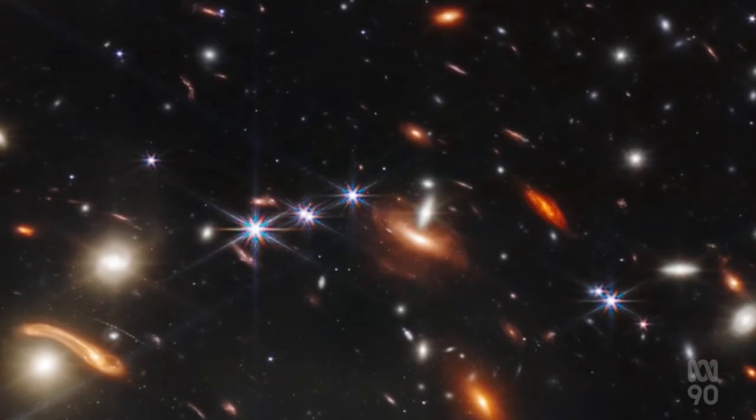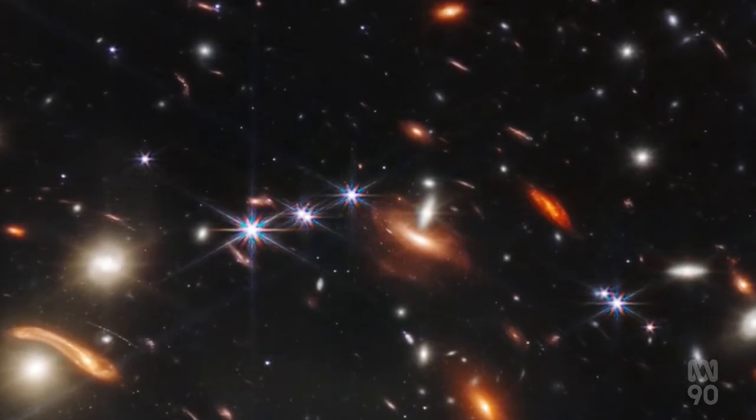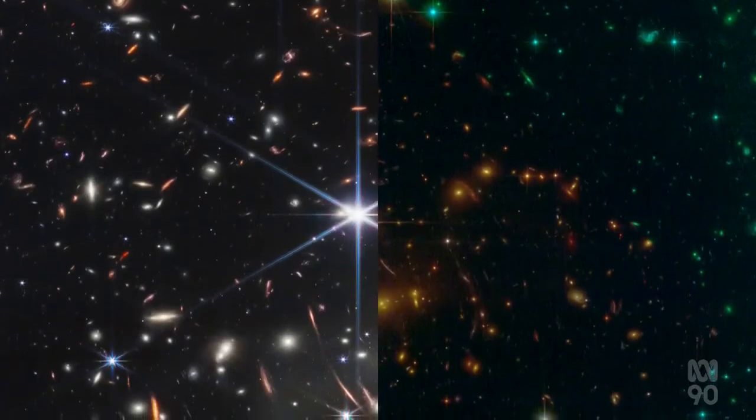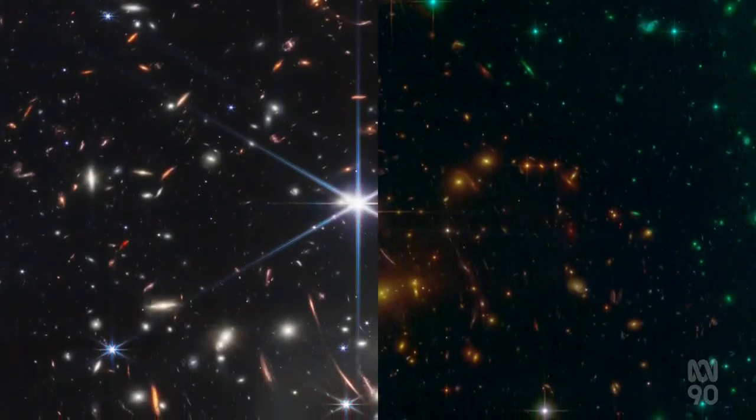The James Webb Telescope uses infrared cameras and sensors to peer into parts of the universe with a level of detail much greater than its 30-year-old predecessor, the Hubble Telescope.